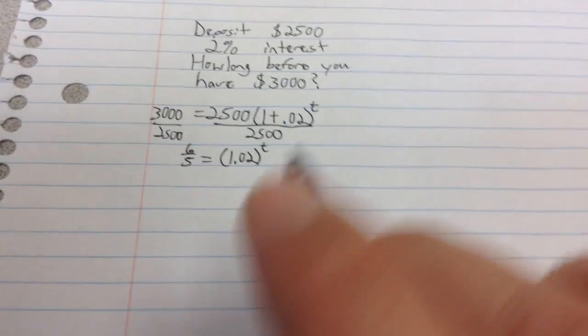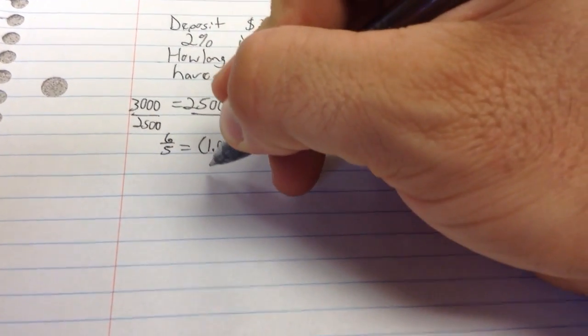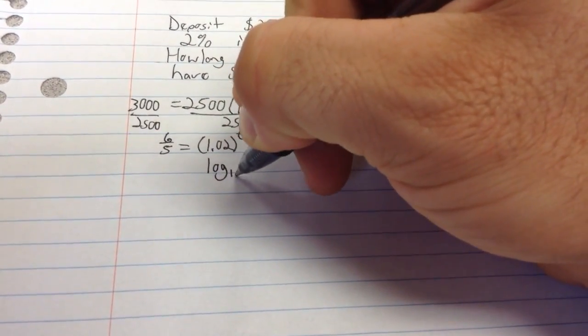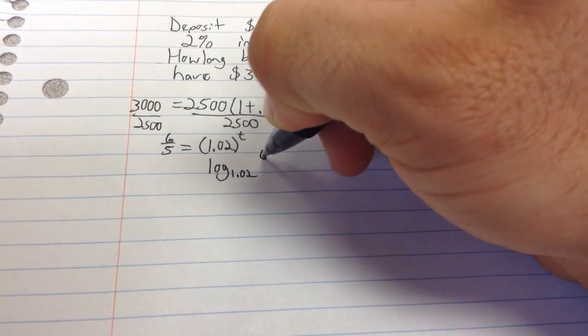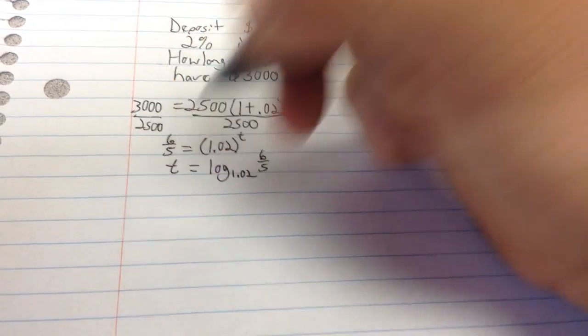Same thing here. This base raised to this exponent equals this number. So I'm going to do the log base 1.02 of 6 fifths equals my t, my time here.